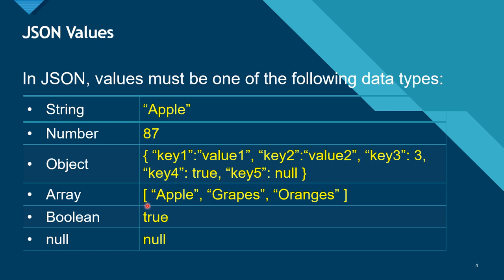An array means a list. It contains variables which are separated by commas. In this case, it is an array of strings, because it contains 'apple' which is a string, then a comma, then another string, then another string. So it contains strings, objects, or numbers separated by commas — this is an array of strings.